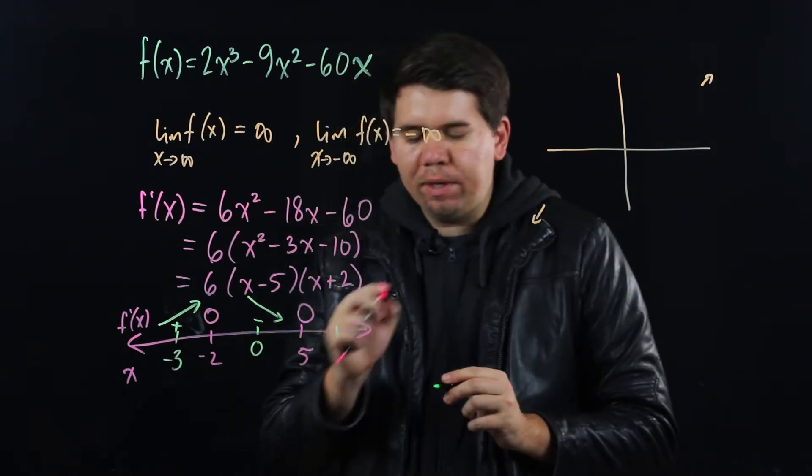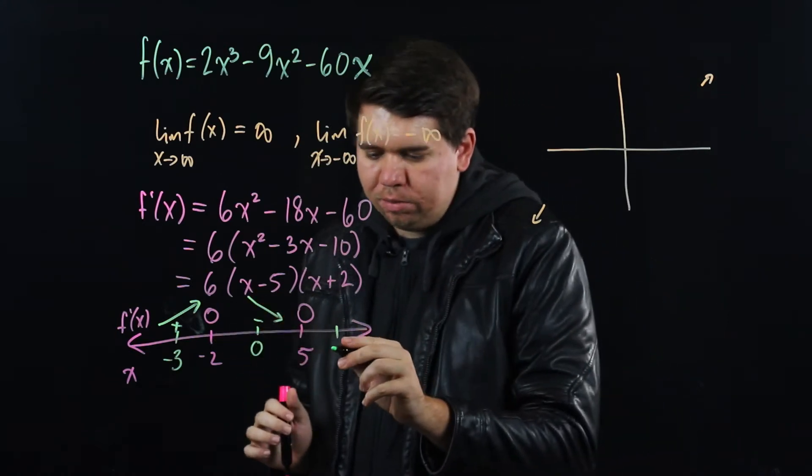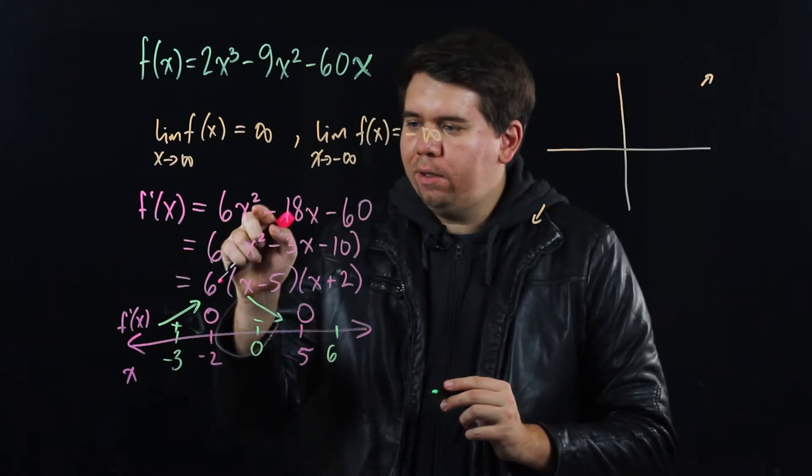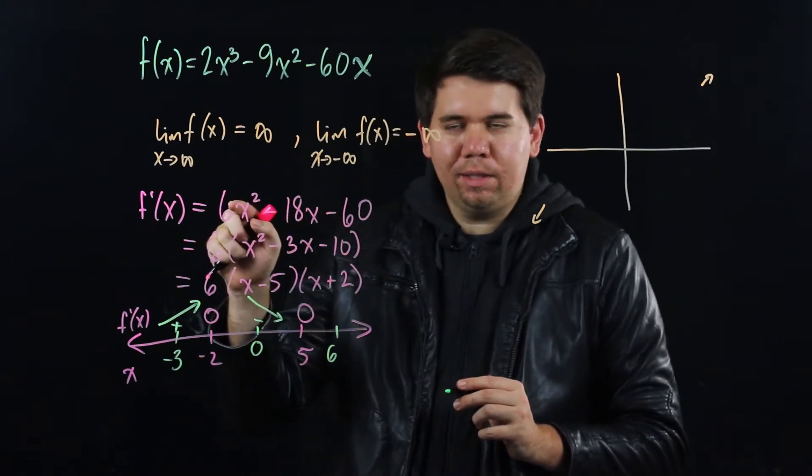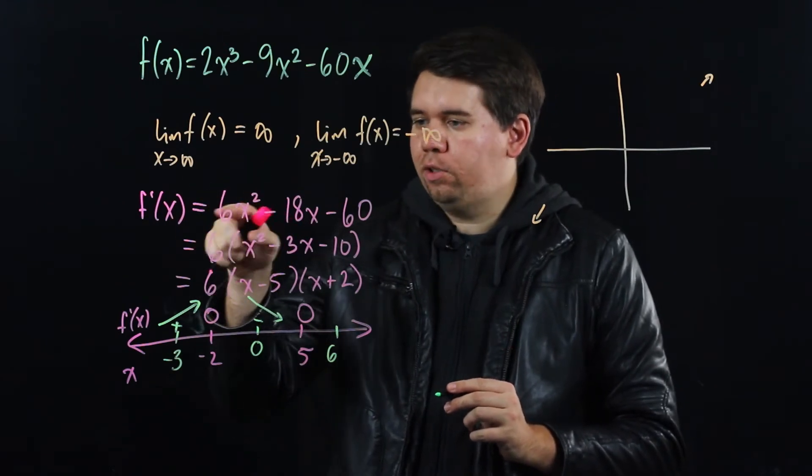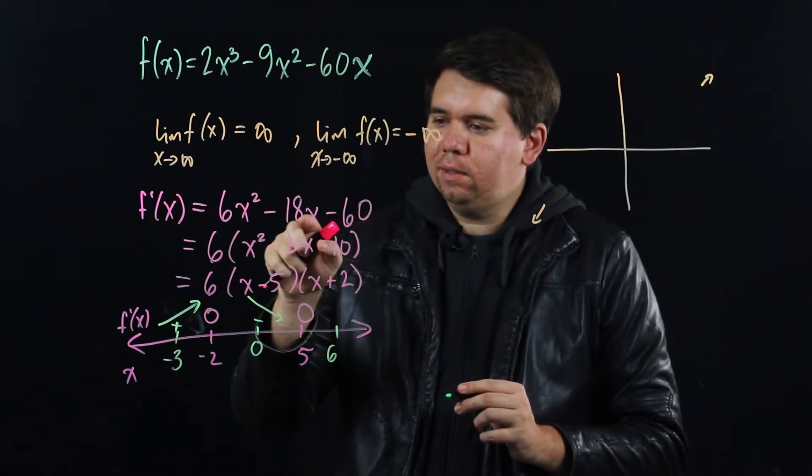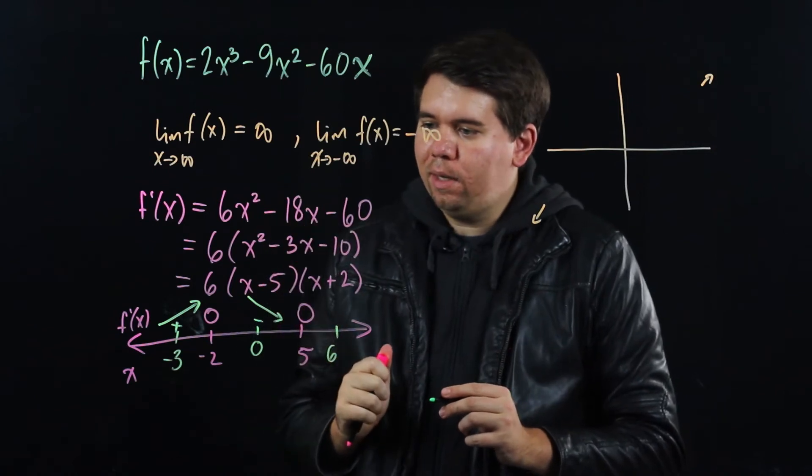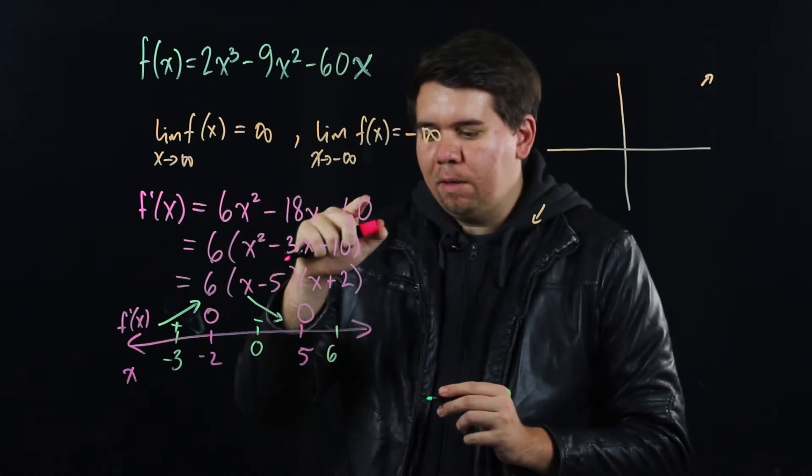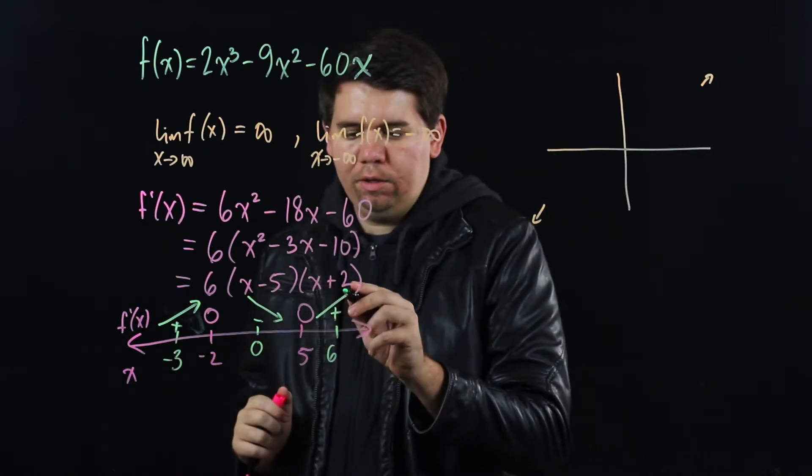The last interval we care about are numbers bigger than 5. You can plug in any of them you want—6, 7, 10, 100. Let's just do 6. Plug 6 into this function. 6 squared is 36 times another 6 is 216. 216 minus the 60 is 156, and 18 times 6 is 108. Well, that's less than what we had, so it's still a positive number when you plug in 6, and so it's increasing on that interval.